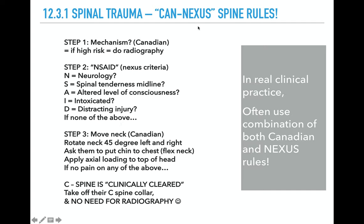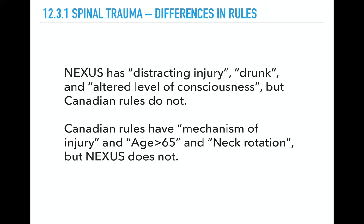The CanNexus spine rules are a combination of the Canadian and the Nexus. Step one, look at the mechanism of injury — if that's high risk, you need imaging. Then do the NSAID, which is your Nexus criteria. Step three, using the Canadian part, if the patient can rotate their neck without any pain, then you've cleared their C-spine clinically and you don't need any imaging. Key differences: Nexus includes distracting injury, alcohol intoxication, and altered level of consciousness, which the Canadian rules do not. The Canadian rules incorporate mechanism of injury, older age, and neck rotation — things Nexus does not include. That's why the CanNexus combined rules are what I use in clinical practice.